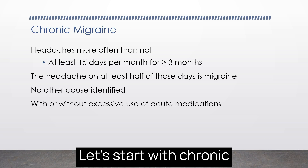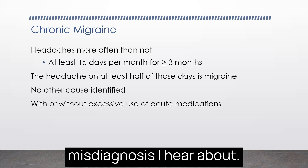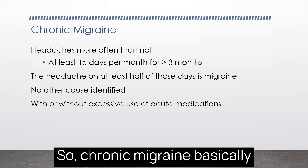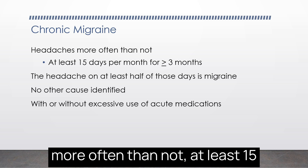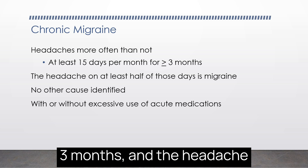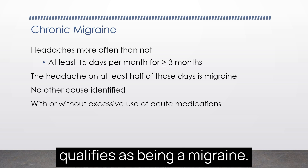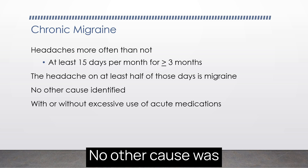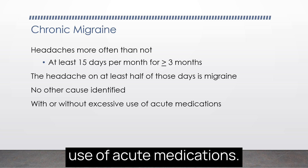Let's start with chronic migraine, which is probably the most common misdiagnosis I hear about. Chronic migraine is defined as having headaches more often than not — at least 15 days out of the month for at least three months — where the headache on at least half of those days qualifies as a migraine. No other cause is identified, and there may or may not be excessive use of acute medications.